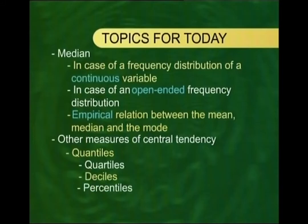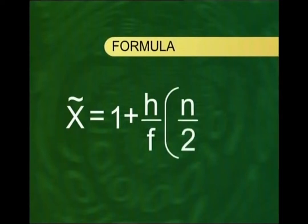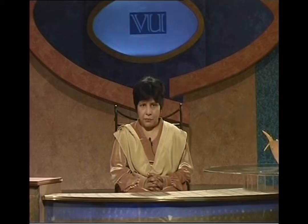In the case of the frequency distribution of a continuous variable, the formula for the median is: x̃ = L + (H/F) × (N/2 − C). In this formula, L, H, F, N, and C are all terms with definite meanings which I will now explain.